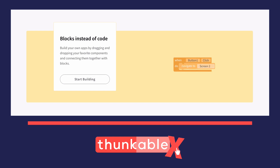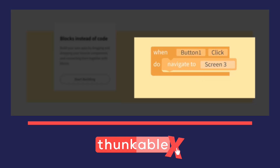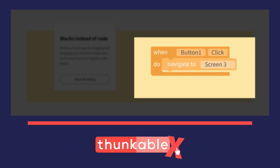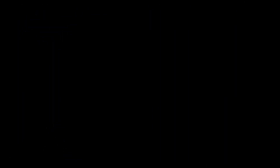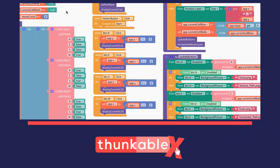Here is an example of what block coding looks like. You can see we have a 'when button one click' block and a 'navigate to screen' block, and then you can select the elements that you want to move to within that. Here's an app that I have worked on — here are all the blocks that support it. You can see this can get somewhat complex, but when you break it down into the pieces, it is pretty simple.